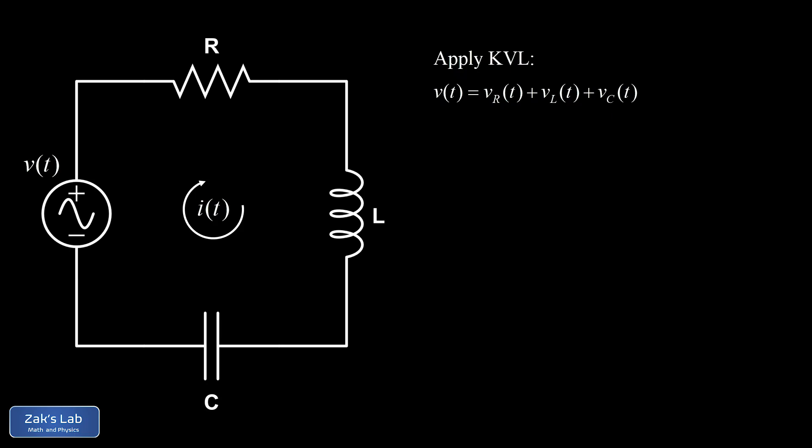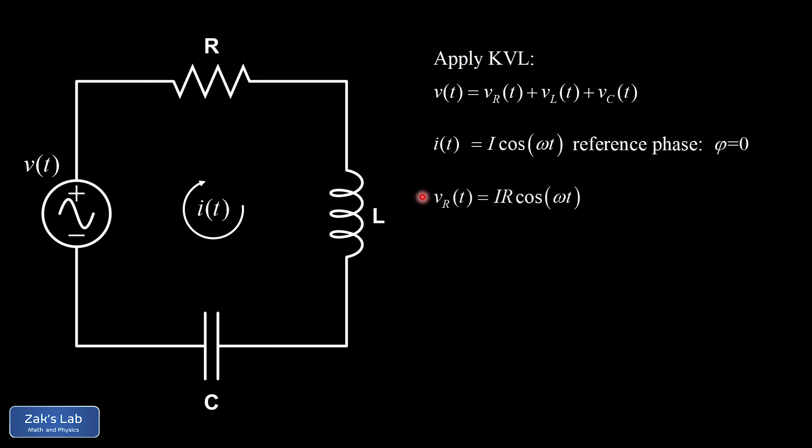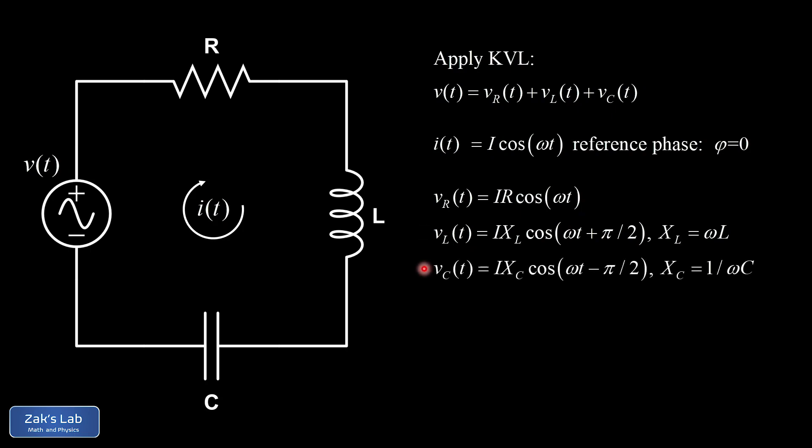Using a reference phase of zero for the current function, we substitute the sinusoidal functions for the voltage across each element. The resistor voltage is in phase with the current, with amplitude I·R. The inductor voltage leads the current by π/2, with amplitude I·X_L where X_L = ωL. The capacitor voltage lags the current by π/2, with amplitude I·X_C where X_C = 1/(ωC).